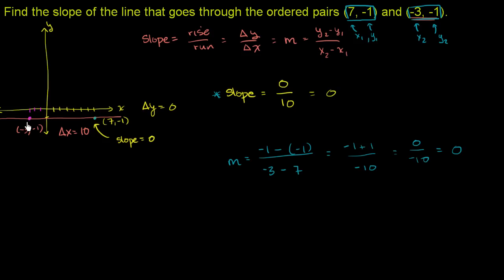And negative 3, negative 1 is our end point. So if we start over here, our change in x is going to be negative 10. But our change in y is still going to be 0. So regardless of how you do it, the slope of this line is 0. It's a horizontal line.